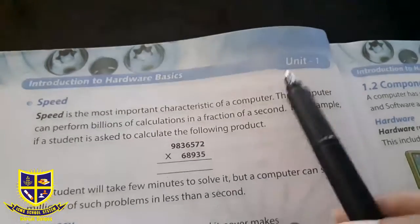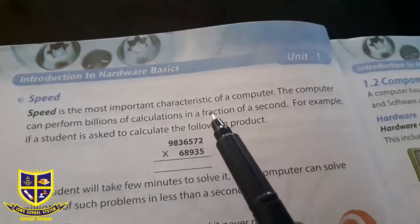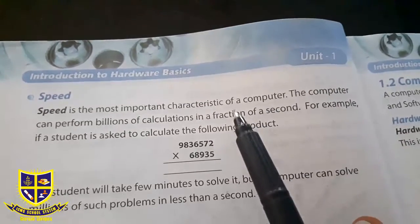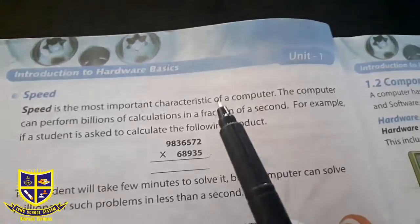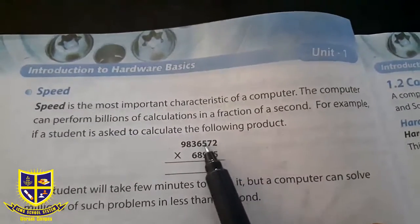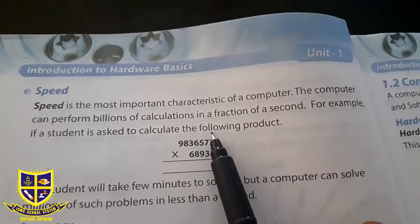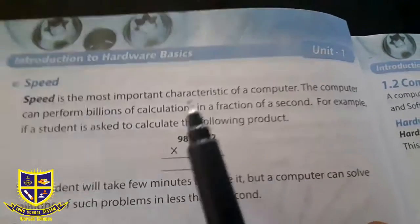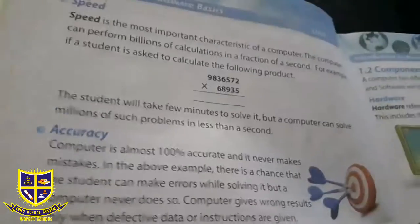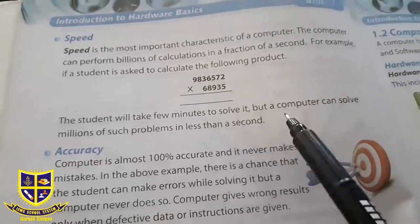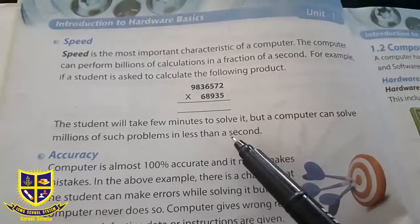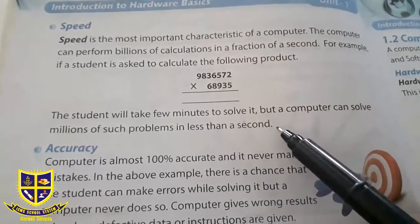Speed का आपको बताया है कि जितनी देर में हम यह question solve करेंगे — minimum 15 minutes, या कम से कम five to seven minutes — लेकिन जब आप यह command computer को देते हैं, तो वो within seconds calculate करके आपको answer दे देता है। The students will take a few minutes to solve it, but a computer can solve millions of such problems in less than a second।